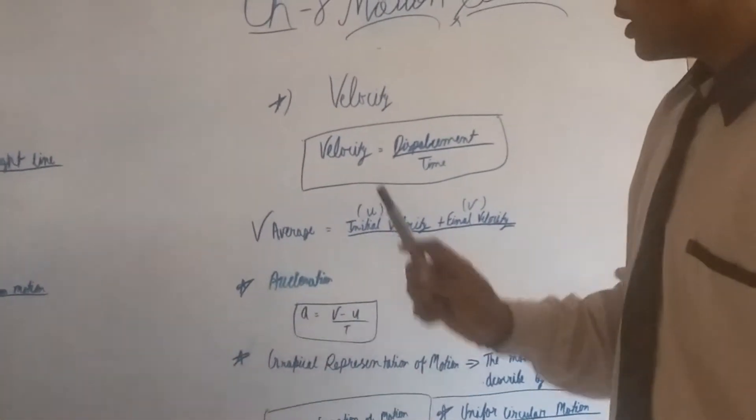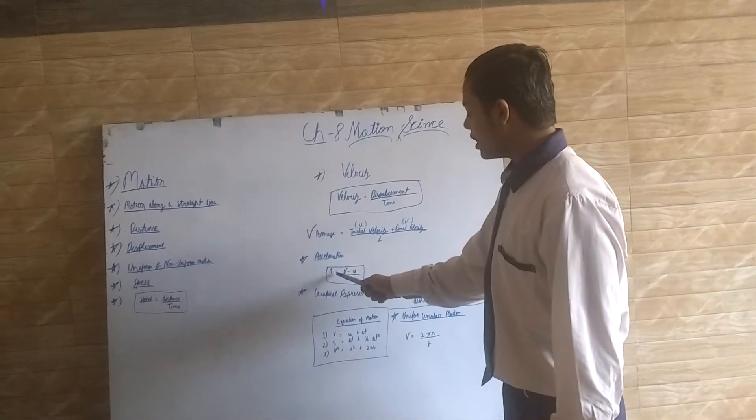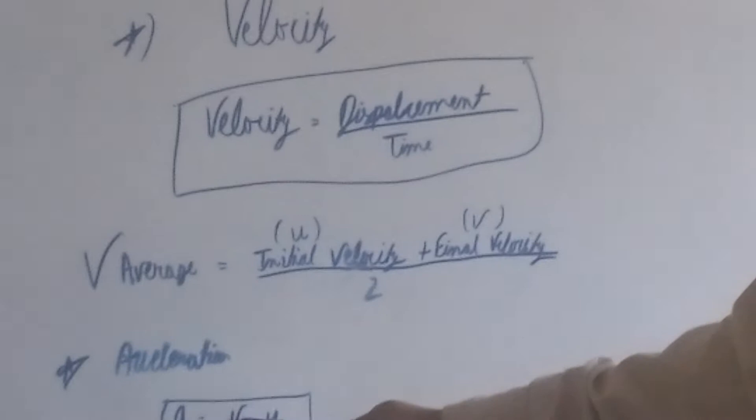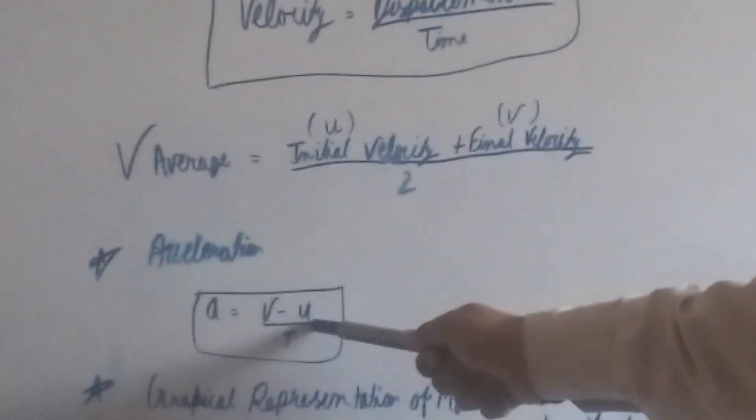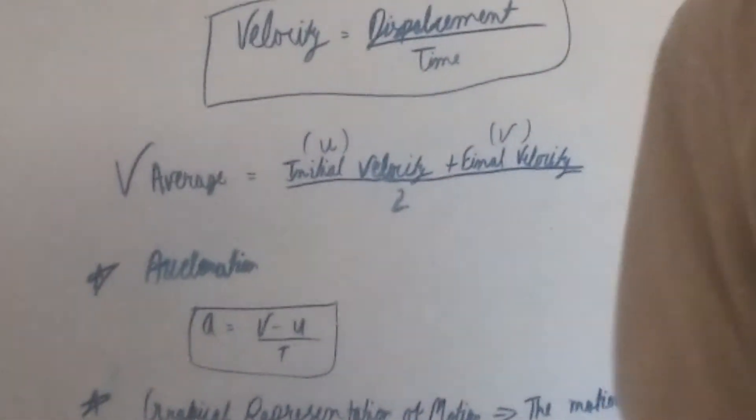Acceleration: Its formula is a equals final velocity minus initial velocity divided by time. There are two major topics in acceleration.